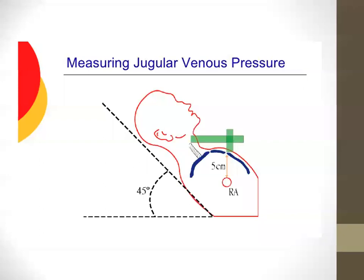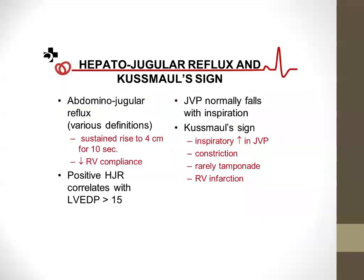An important sign to look for is inspiratory collapse: in a normal person, JVP should collapse with inspiration. The hepatojugular reflex — better termed the abdominojugular reflex — involves applying periumbilical pressure to increase intra-abdominal pressure, increasing preload to the heart. A positive result is a sustained JVP rise greater than 3 cm (4 cm or above) for 10 seconds. This indicates decreased RV compliance and can be used as a surrogate for LV end-diastolic pressure greater than 15.